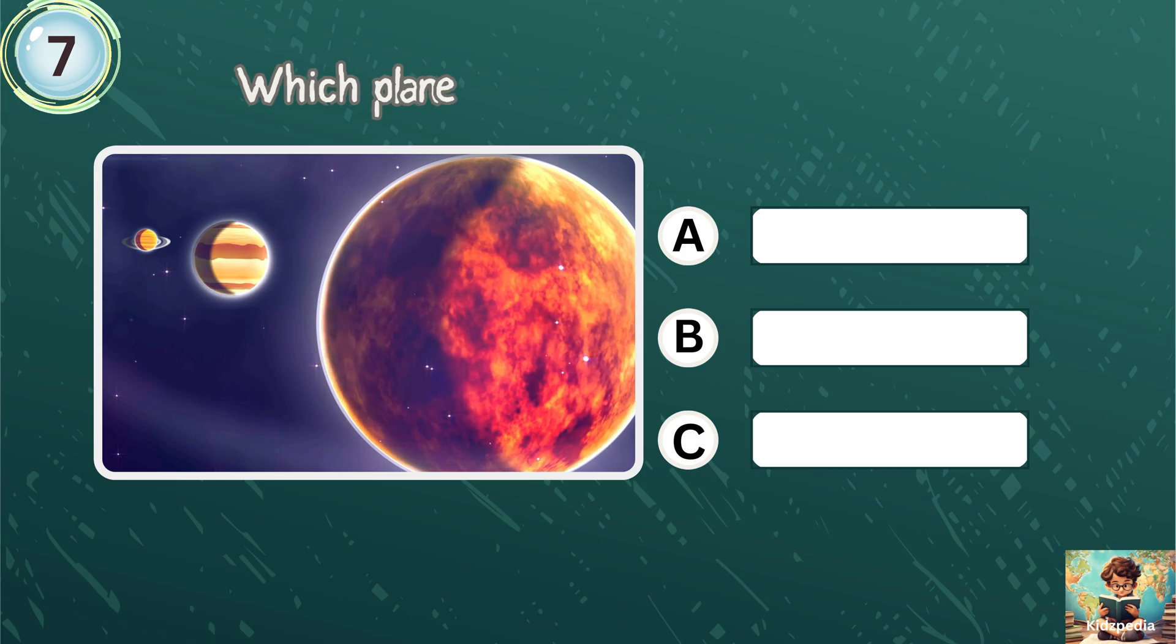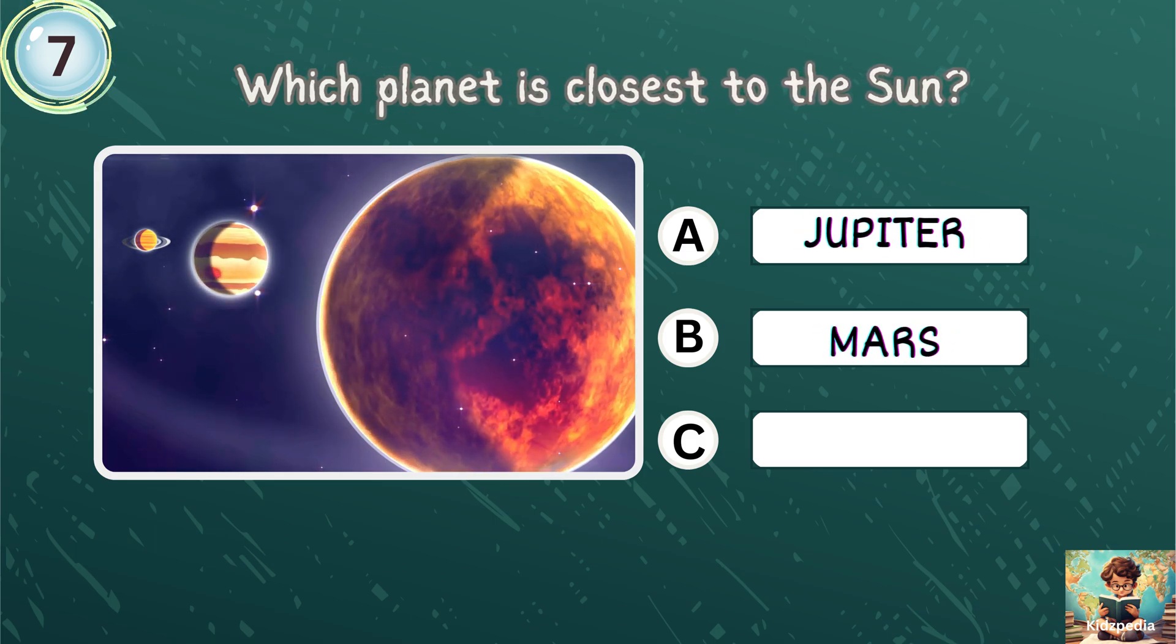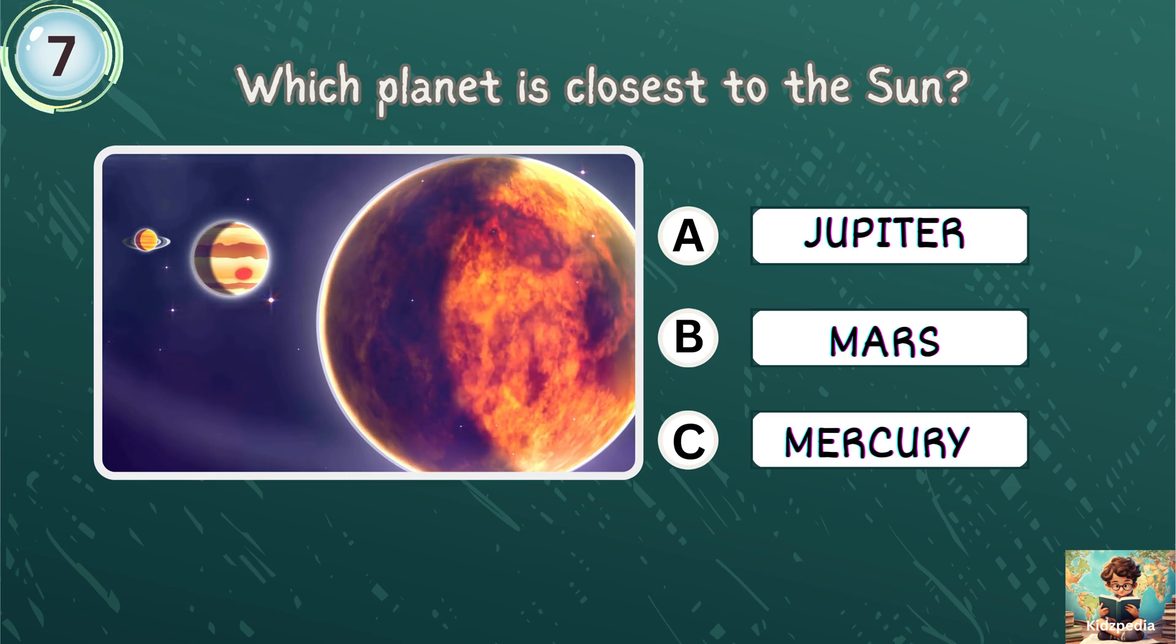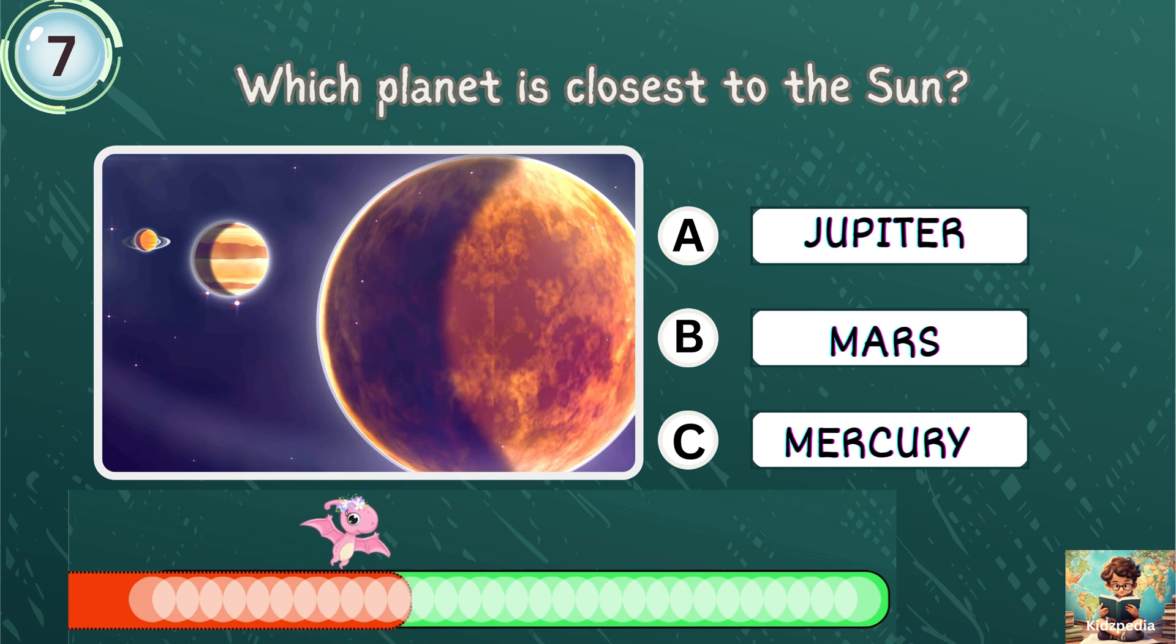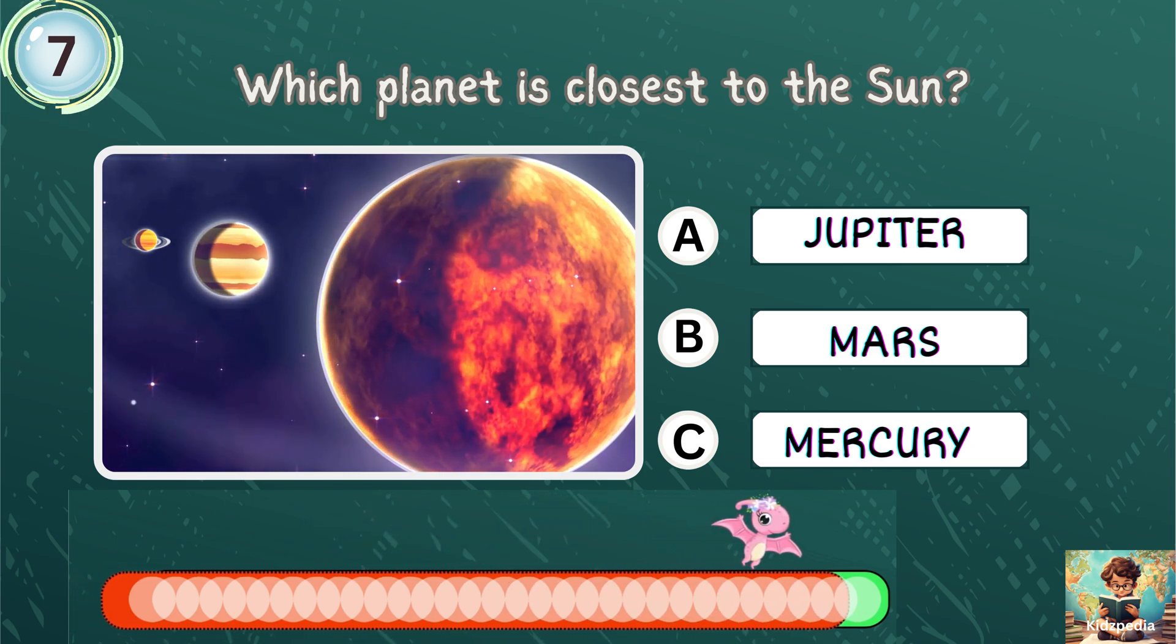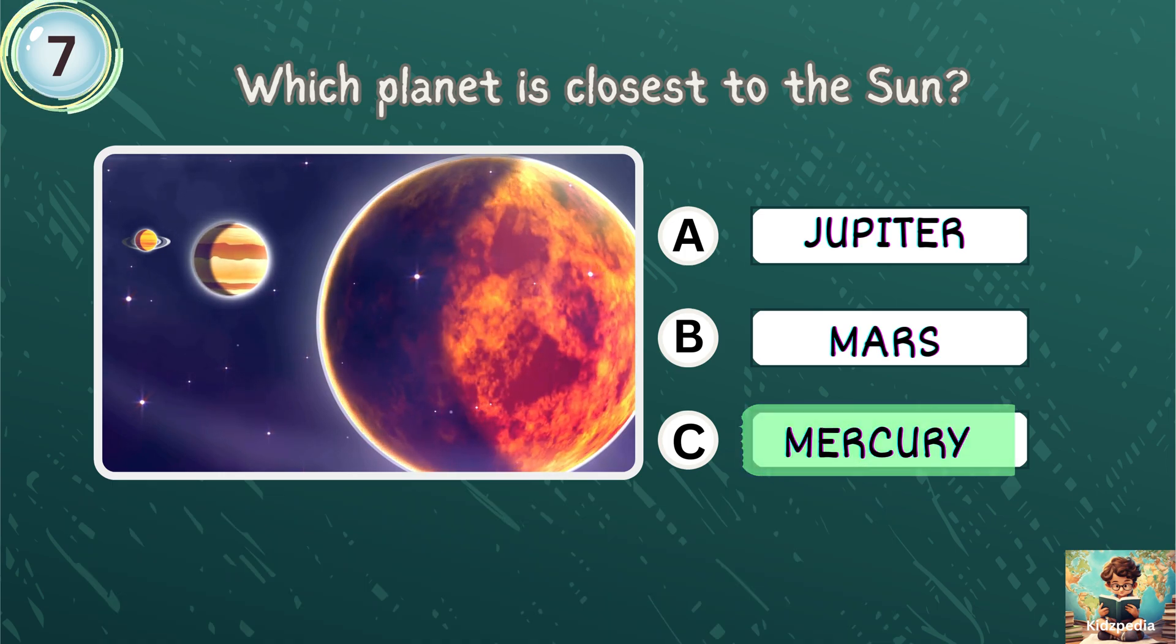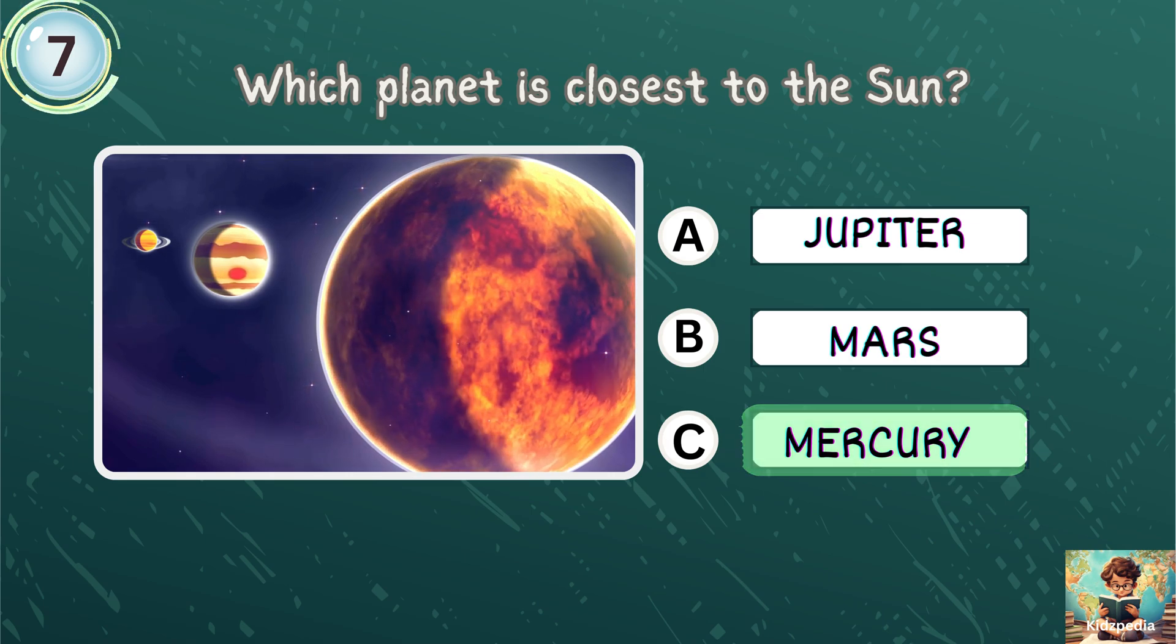Which planet is closest to the sun? Jupiter, Mars, Mercury. Correct answer is Mercury. Mercury orbits closest to the sun.